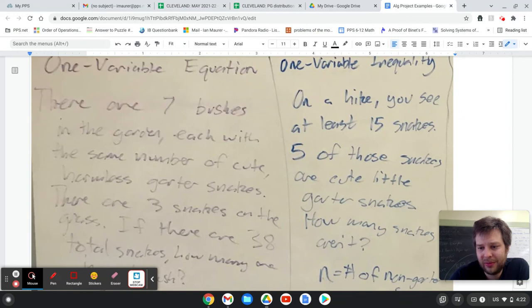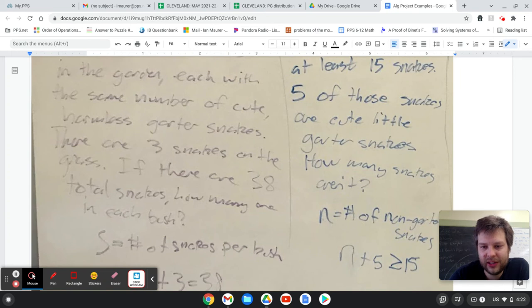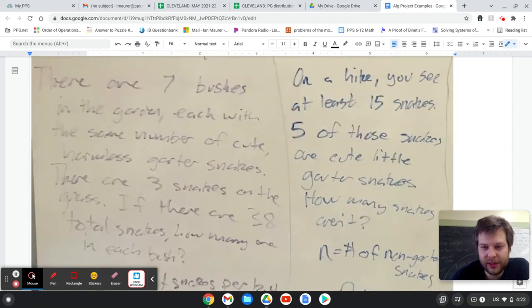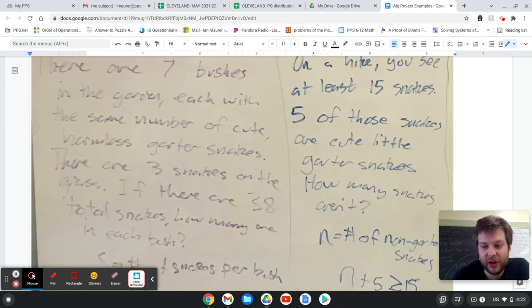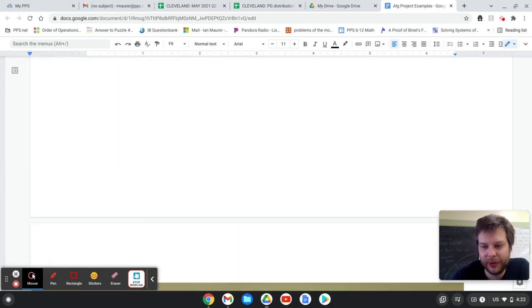Sort of similar vibe with the one variable inequality. On a hike, you see at least 15 snakes. Five of them are cute little garter snakes. And how many snakes aren't? And so really quite silly problem, but you could just say n plus 5 is greater than or equal to 15 because you have the five garter snakes and some non-garter snakes. That's what n stands for. And again, it says at least, so that's why I wrote greater than or equal to.